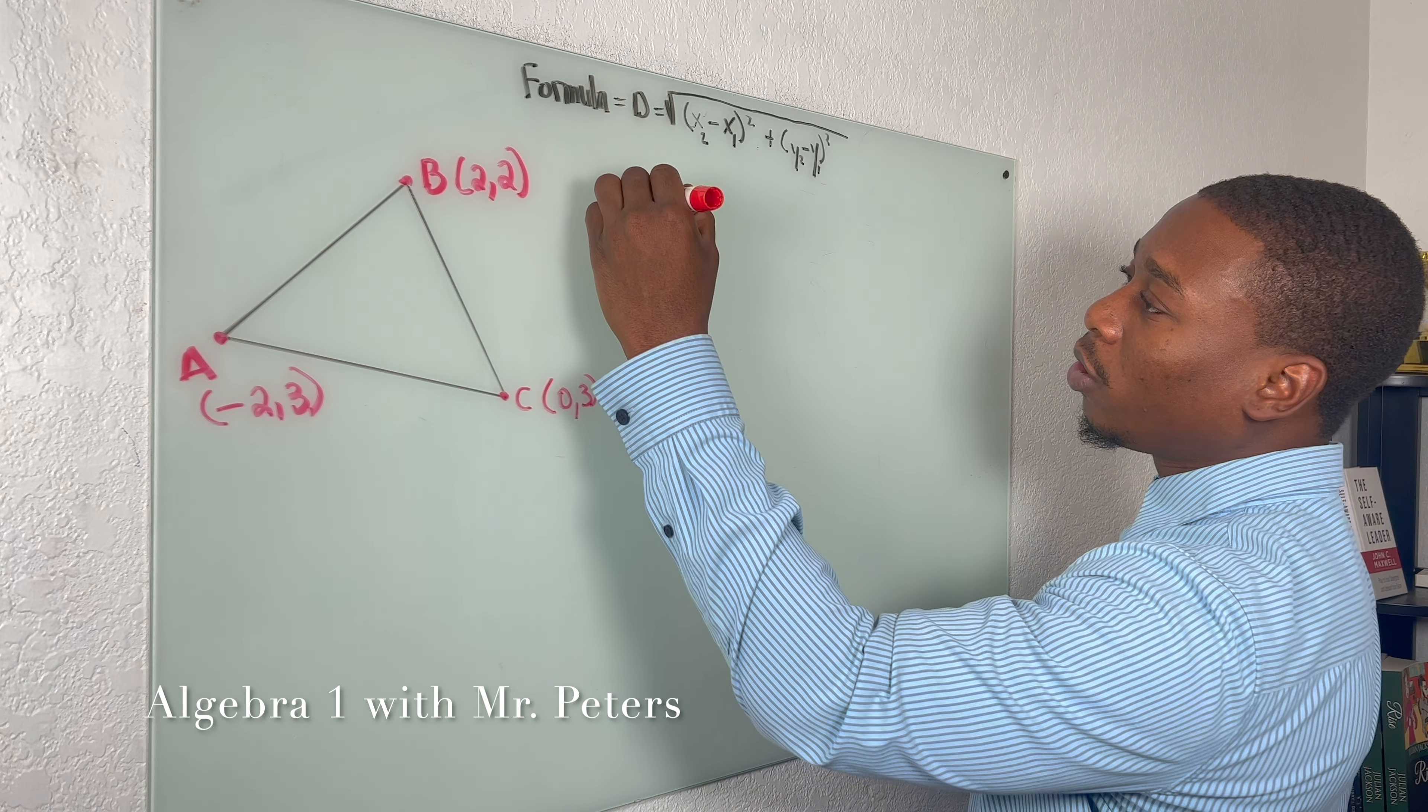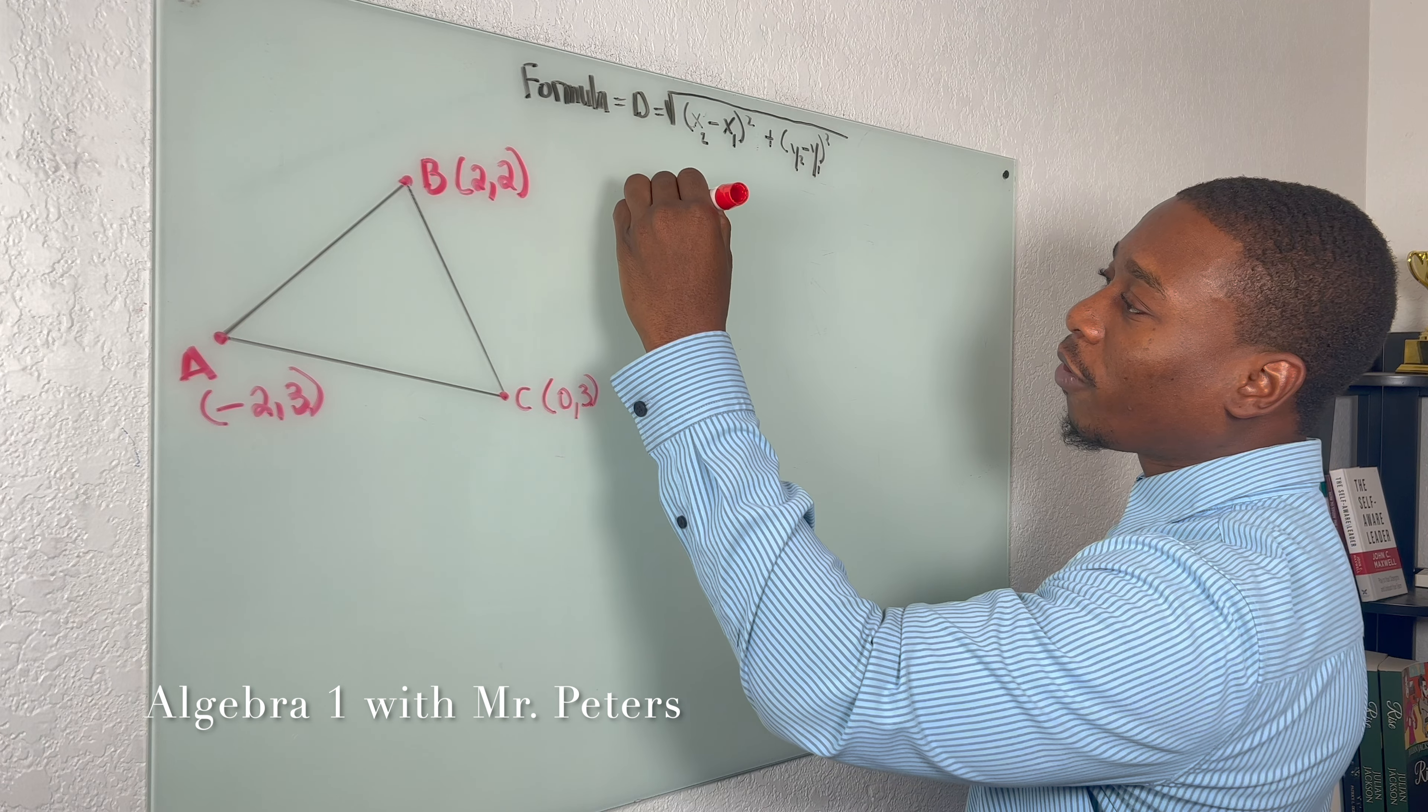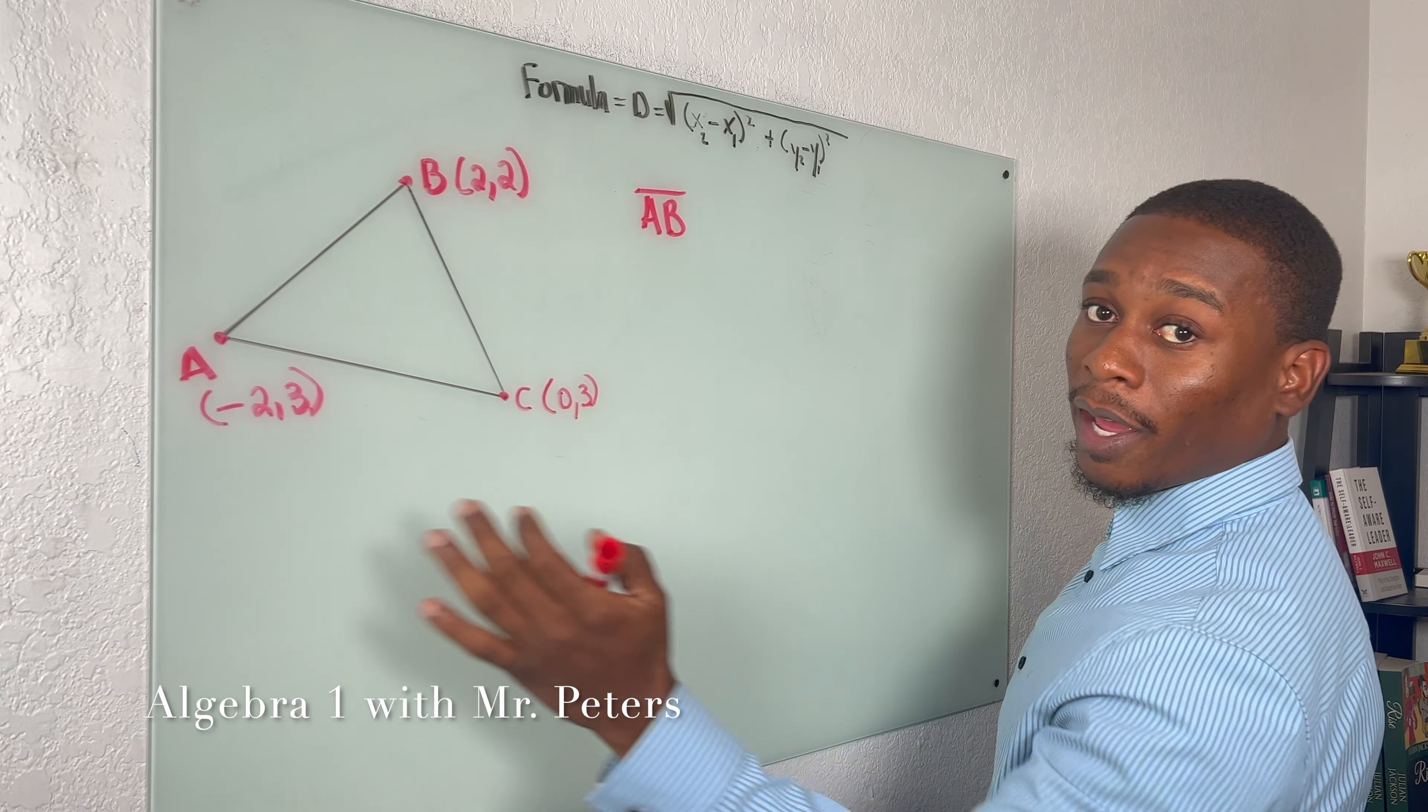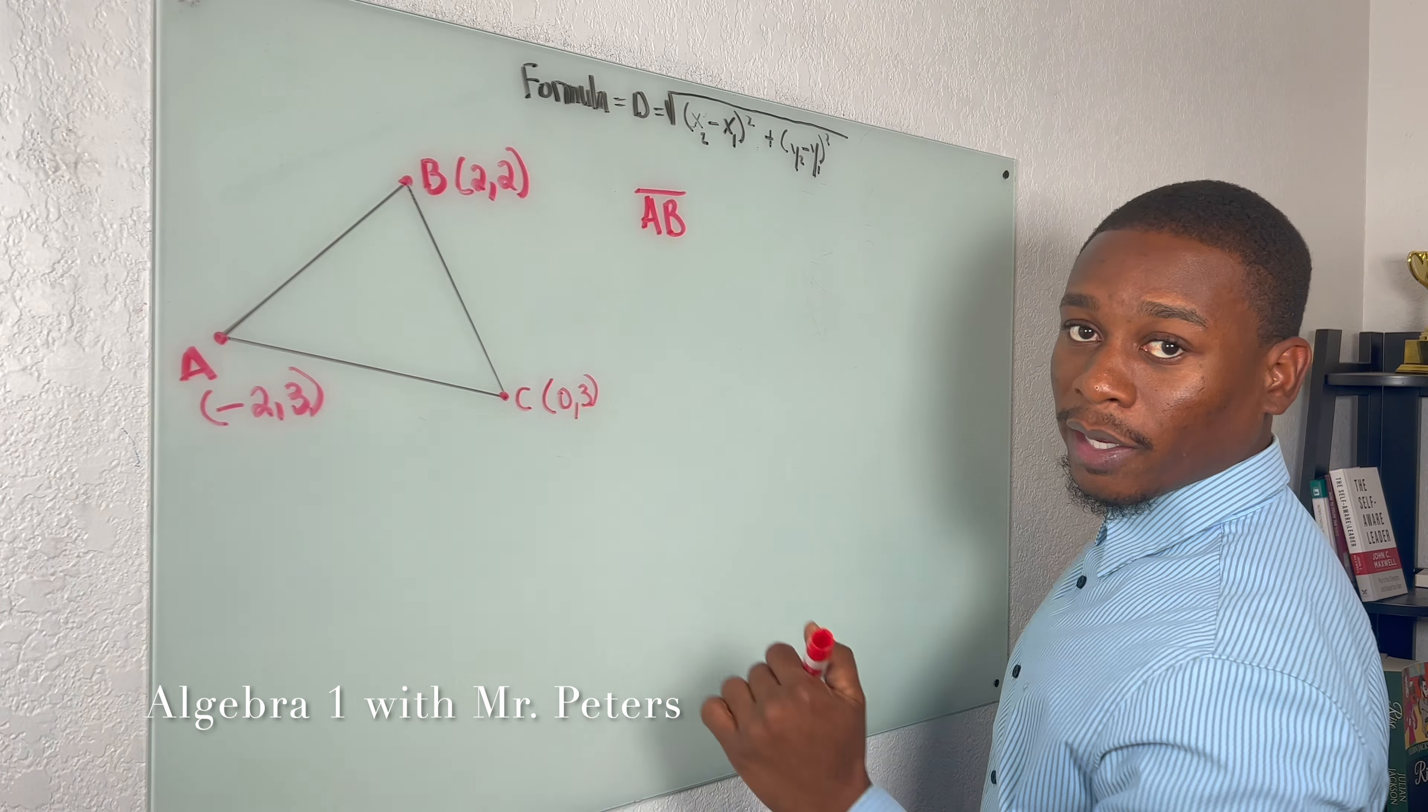So what we're going to do, first thing we need to do is figure out the lengths of each side: A to B, B to C, C to A, and we're going to follow the distance formula to do so.